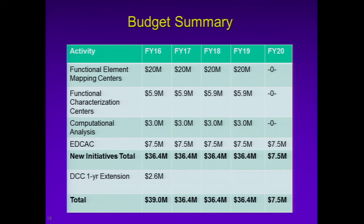This is a summary of the budget request. We are looking for flat funding over four years for each of the four initiatives, with the exception of the EDCAC's fifth-year funding to close out activities, as well as a one-year extension of the current DCC. This is for a total of $36.4 million a year. This level of support is actually equivalent to the level that ENCODE received in FY12, the first year the current phase was funded. Due to budget constraints, much of that funding was for one year only, and we've had to take significant reductions in the out years. Based on FY14 figures, this request represents approximately a 21 percent increase over what ENCODE currently has.